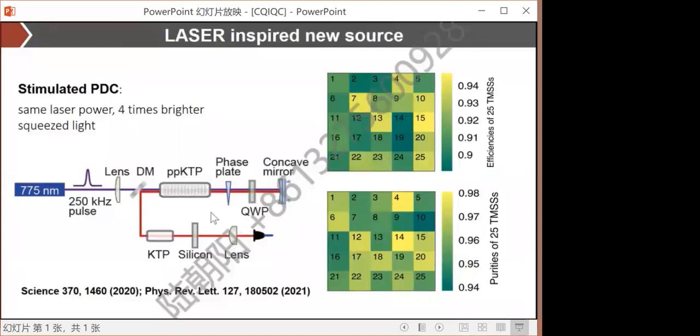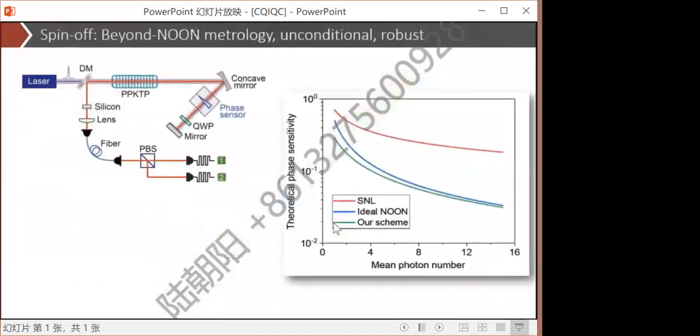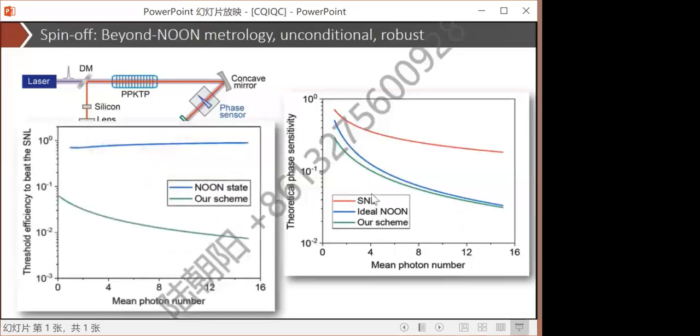In the future, we can scale to even higher order of stimulated SPDC. Interestingly, when we are developing the stimulated SPDC squeezed light, there's actually a spin-off application on Heisenberg-limited phase measurement. The stimulated squeezer can actually be seen as a nonlinear interferometer, which can measure an unknown phase and gives unconditional, scalable, and robust metrological advantage. The method here follows a 1/n scaling as a noon state to reach the Heisenberg limit. But the actual performance is much more robust than the noon state because it has high tolerance to the external noise of the photon loss.